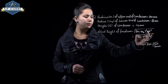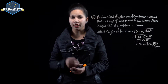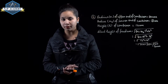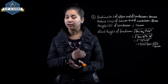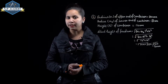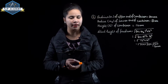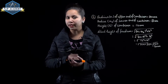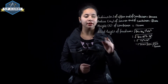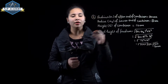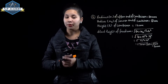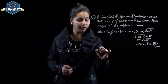12 square is 144 and 16 square is 256. Adding gives 400, and the square root of 400 is 20 centimeter. So slant height of the frustum equals 20 centimeter.